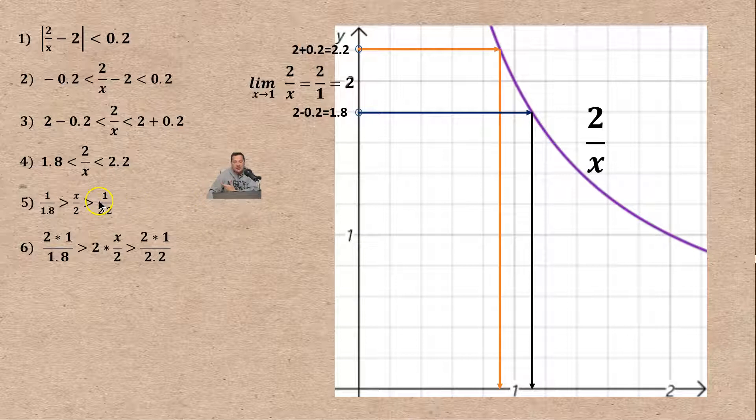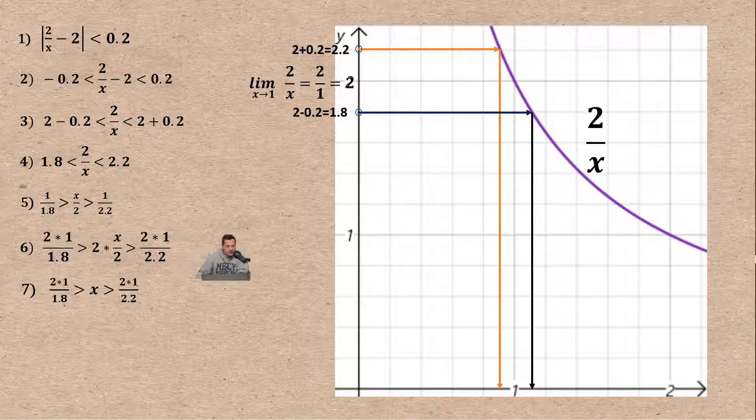Next we want to get the x by itself. I multiply at step number six every term by two because at step number five you have a two on the bottom. You multiply by two to clear all the fractions. The two and the two at step six cancel off leaving only x in the middle of step seven.